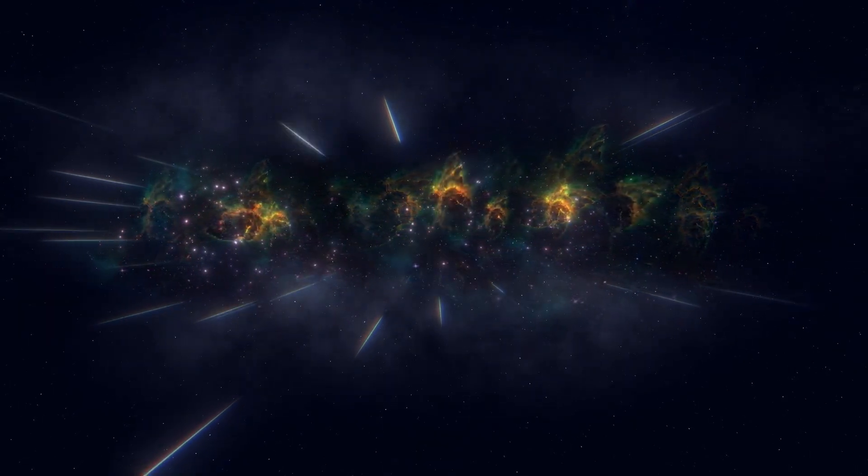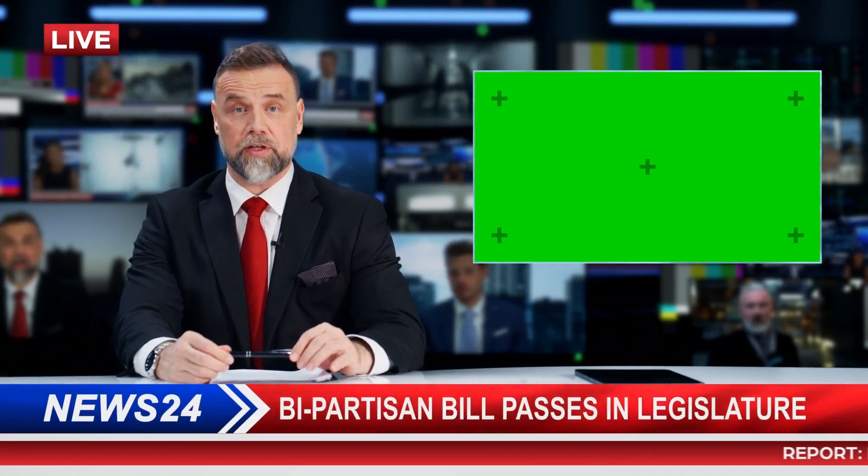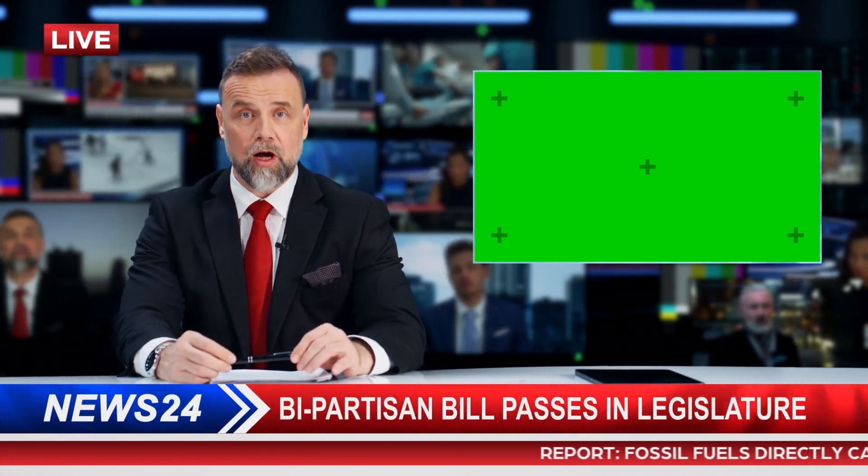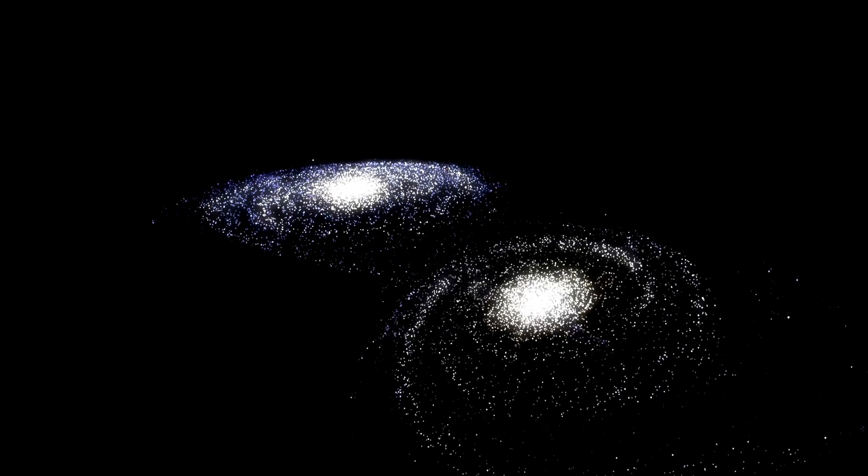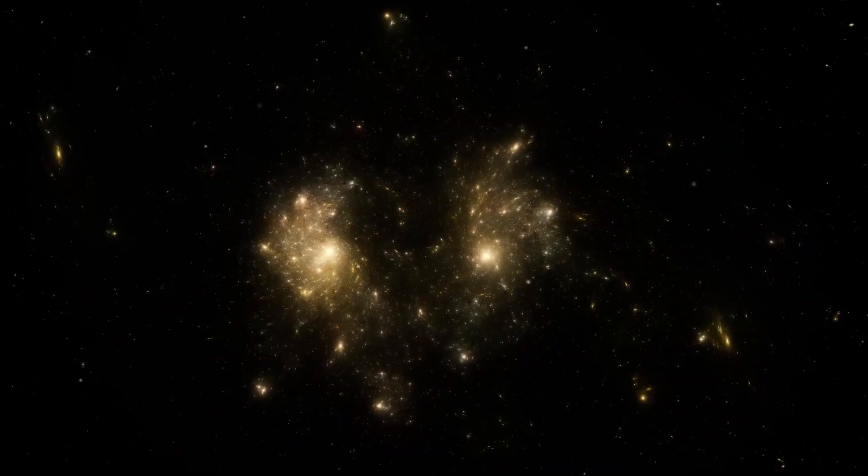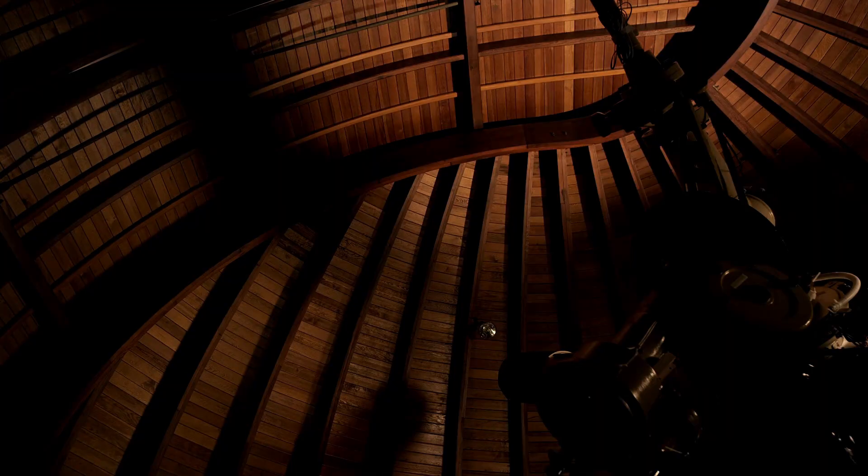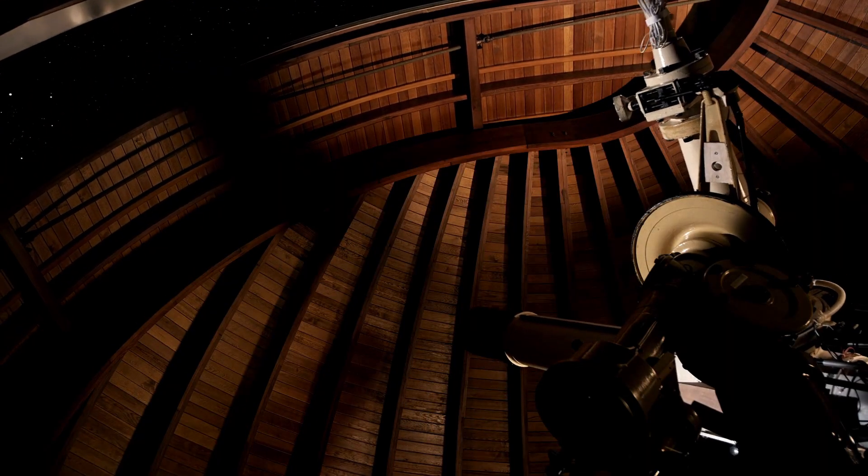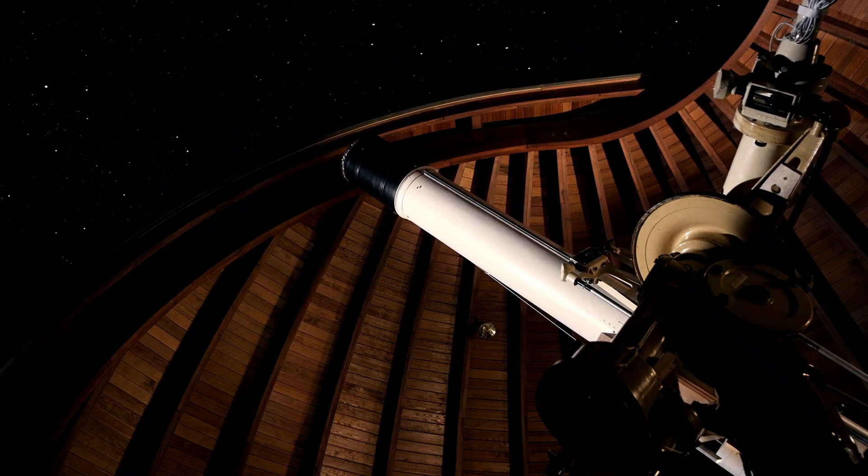We once believed Earth was the center of everything. Then we believed our universe was all there is. Now, we're beginning to accept that our entire universe may just be a ripple on a deeper sea. Webb, ironically, wasn't built to detect this. It was meant to look backward, into our past, into the first light after the Big Bang. But by doing its job too well, it may have captured something even deeper. Evidence not of what came before us, but of what surrounds us, unseen. A higher dimensional framework that doesn't just cradle our universe. It interacts with it, bends it, shapes it. The implications are staggering.